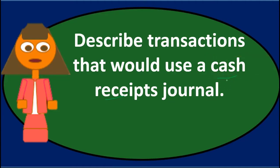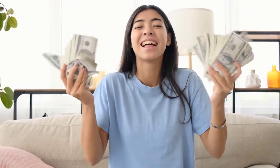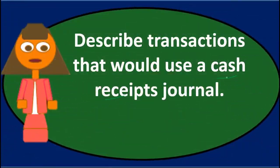Another common transaction is when we make sales on account and then get paid: the entry increasing cash and decreasing accounts receivable would also go in the cash receipts journal. Any other transaction dealing with the receipt of cash goes here as well — for example, if the owner invested money into the business, if we received cash from a loan, or if we earned interest and received cash for it.